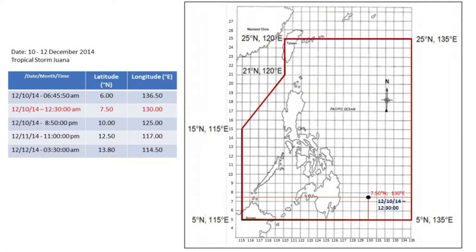Tropical Storm Juana enters the Philippine Area of Responsibility on December 10, 2014 at around 12:30 AM. Typhoon Juana was observed at 7.50 degrees north and 130 degrees east. On same date at 8:50 PM, Typhoon Juana was observed at 10 degrees north and 125 degrees east. On December 11 at 11 PM, Typhoon Juana was found at 12.50 degrees north and 117 degrees east. And on December 12 at 3:30 AM, Typhoon Juana was observed at 13.80 degrees north and 114.50 degrees east, that is outside the Philippine Area of Responsibility. It means that it was on December 12 at 3:30 AM when Typhoon Juana left the Philippine Area of Responsibility or PAR.